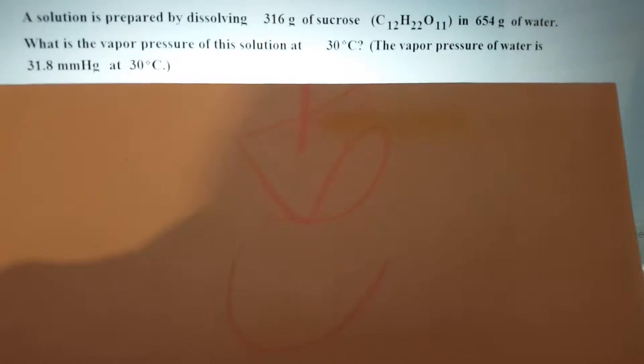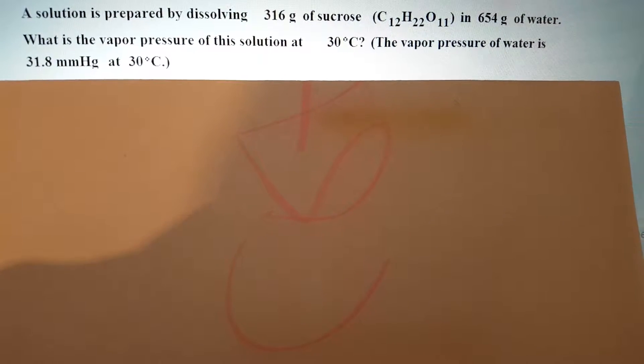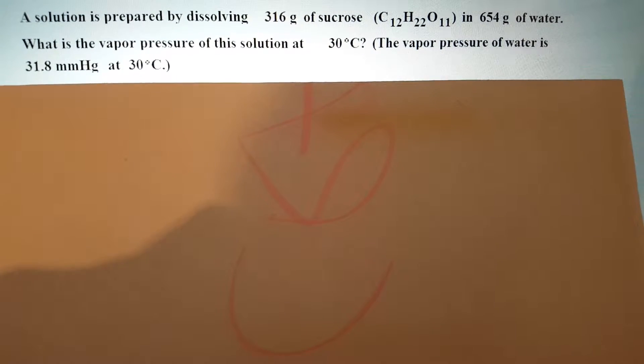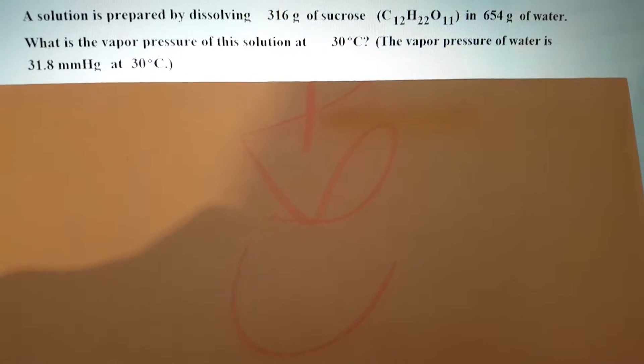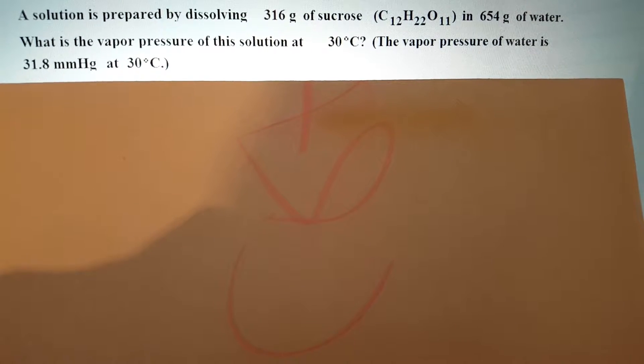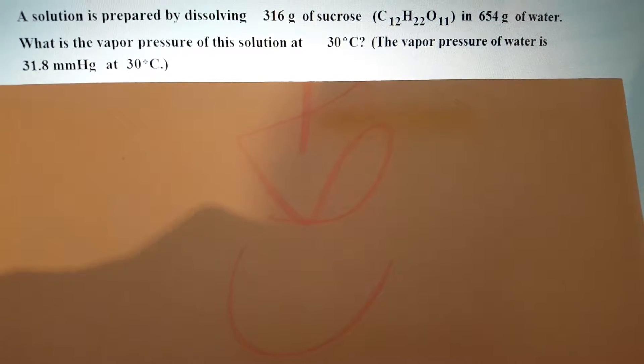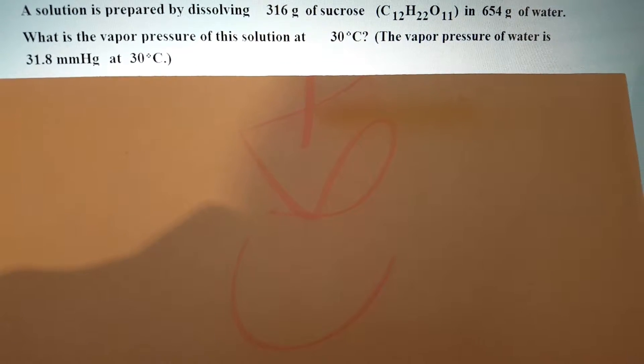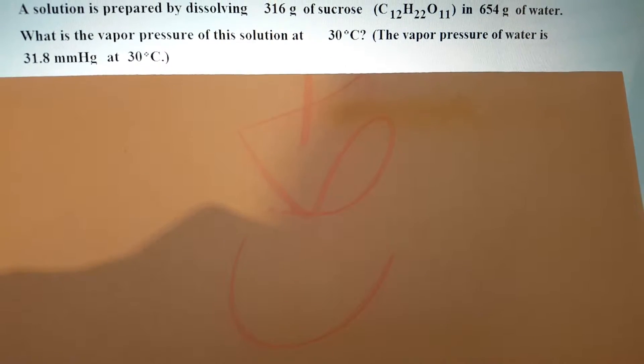In this question, we are given a solution which is prepared by dissolving 316 grams of sucrose in 684 grams of water. And it asks us to solve the vapor pressure of the solution at 30 degrees Celsius, giving us the vapor pressure of water at 30 degrees Celsius as a constant.